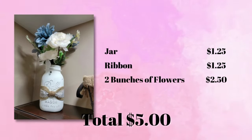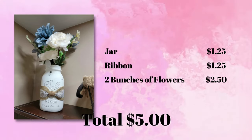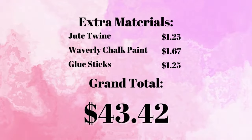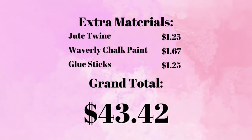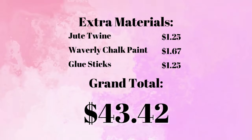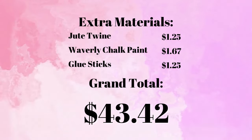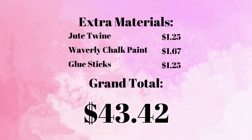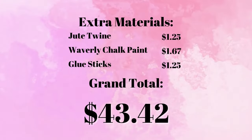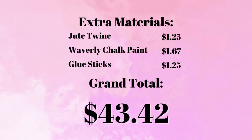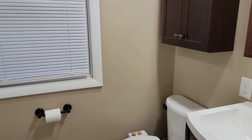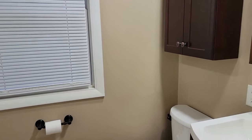For the floral arrangement I had one jar, one pack of ribbon, and two bunches of flowers for a total of $5.00. Some extra materials used across multiple projects were a roll of jute twine, a small bottle of Waverly chalk paint — currently $1.67 at my local Walmart — and a pack of glue sticks from the Dollar Tree at $1.25. Adding those extra materials to all the projects, my grand total was $43.42 — and that's if you had to go to the store right now and buy every single thing. I'm sure you already have a lot of these materials in your stash, which would bring your costs down even more.